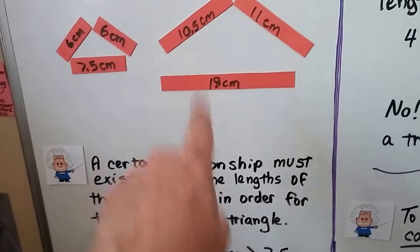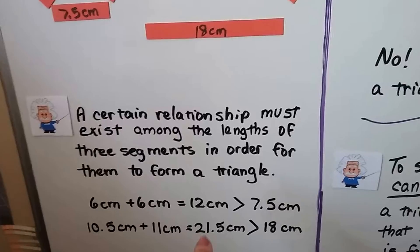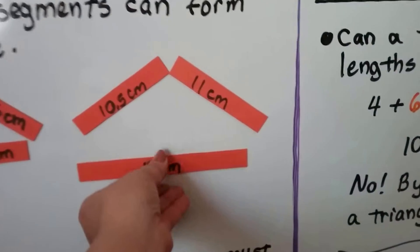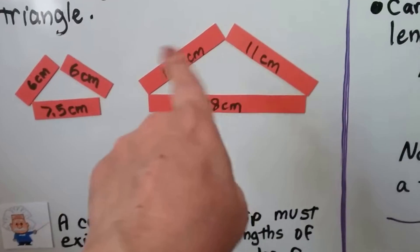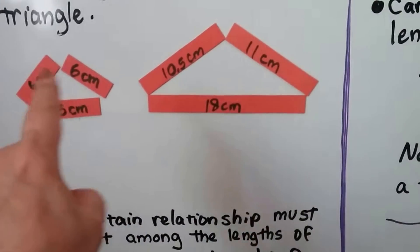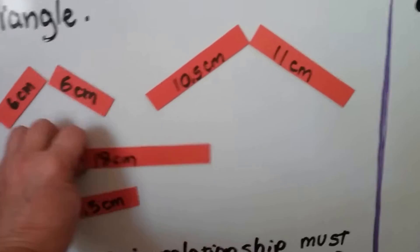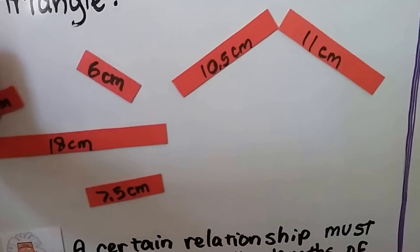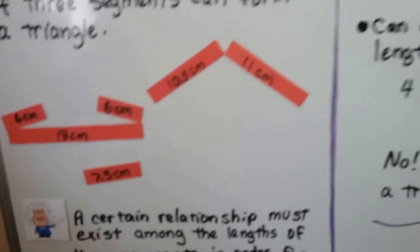And we had the 10.5 centimeter and the 11 centimeter. When we add them together, we get 21.5 centimeters, which is greater than 18, and that's why this one worked. These two lengths were longer than that one, and these two lengths were longer than that one. But when I did this, six plus six is 12, that's not longer than 18, and that's why these could not form a triangle. So that brings us to our theorem.